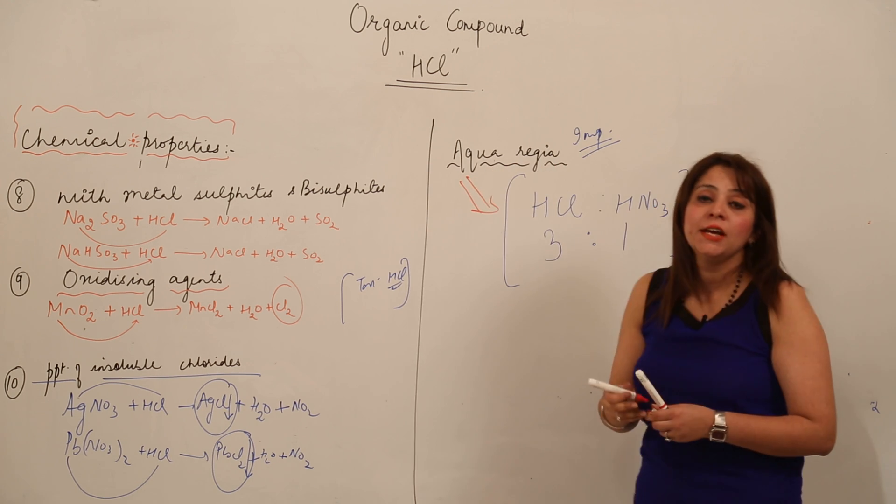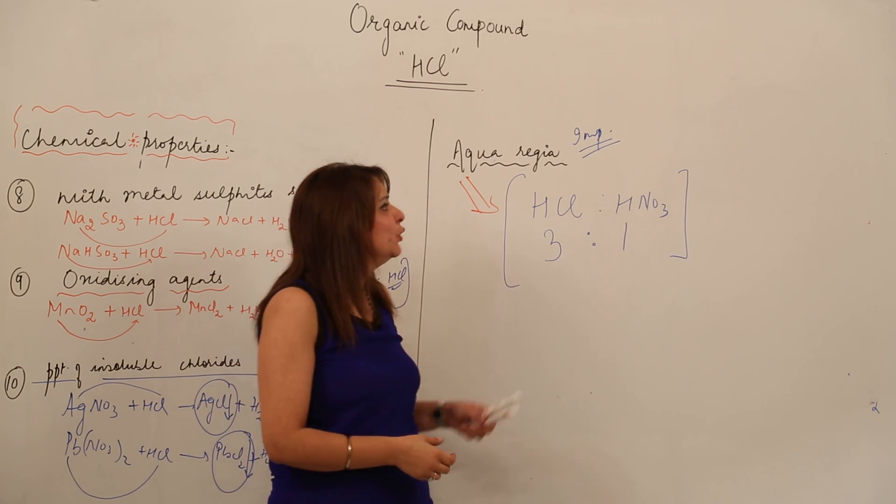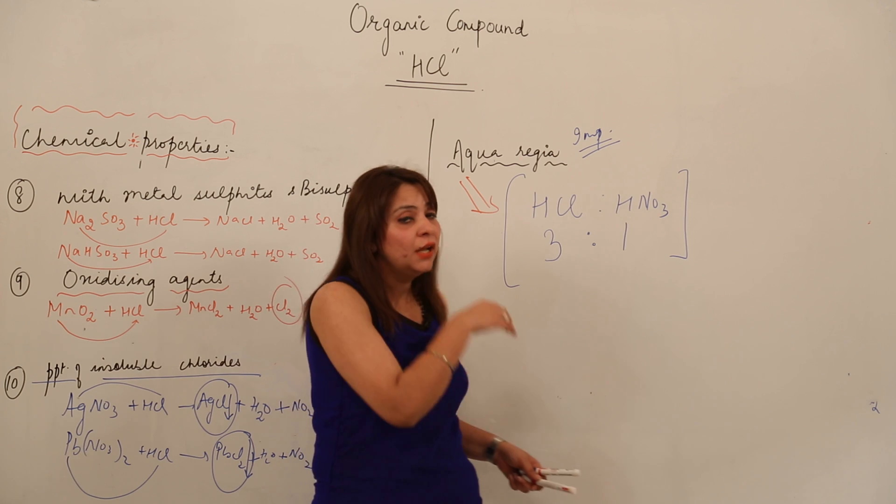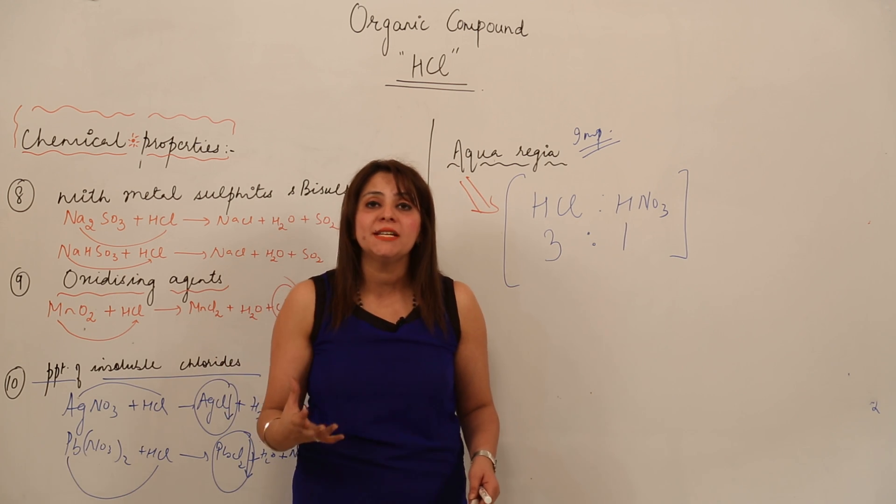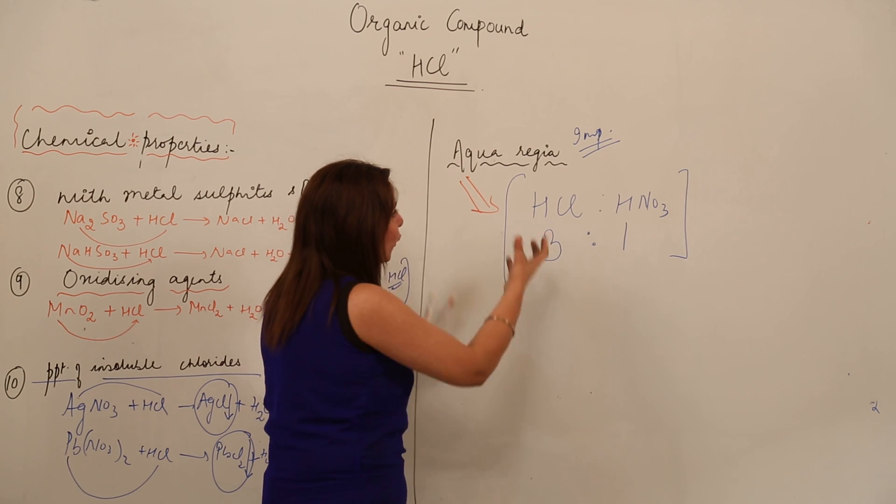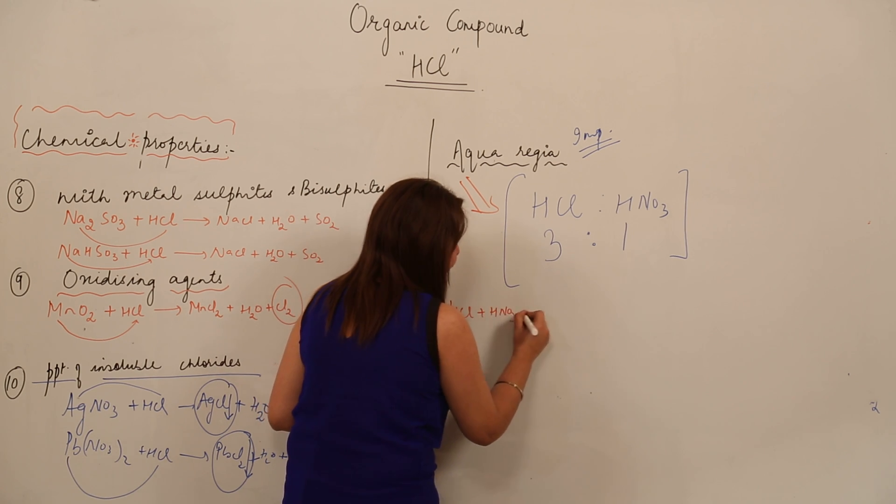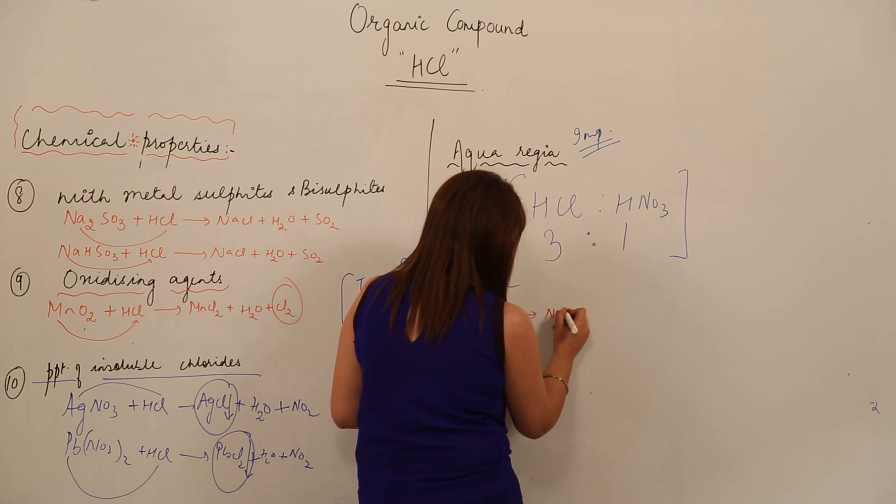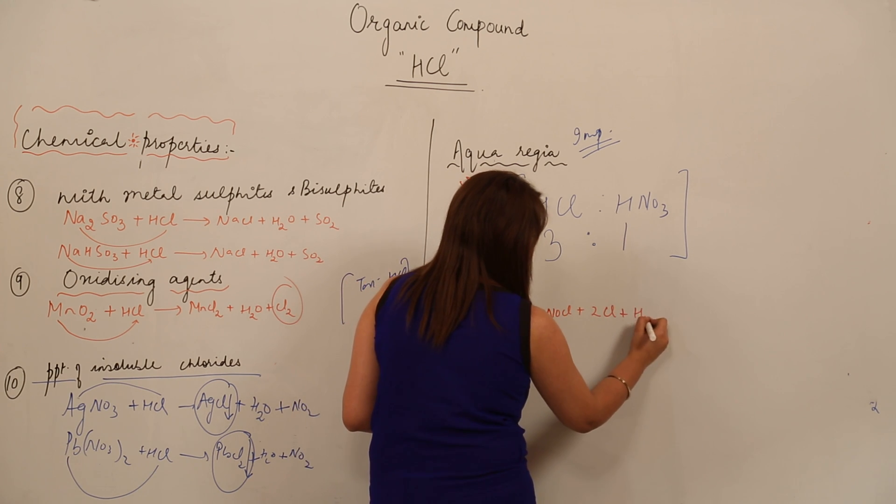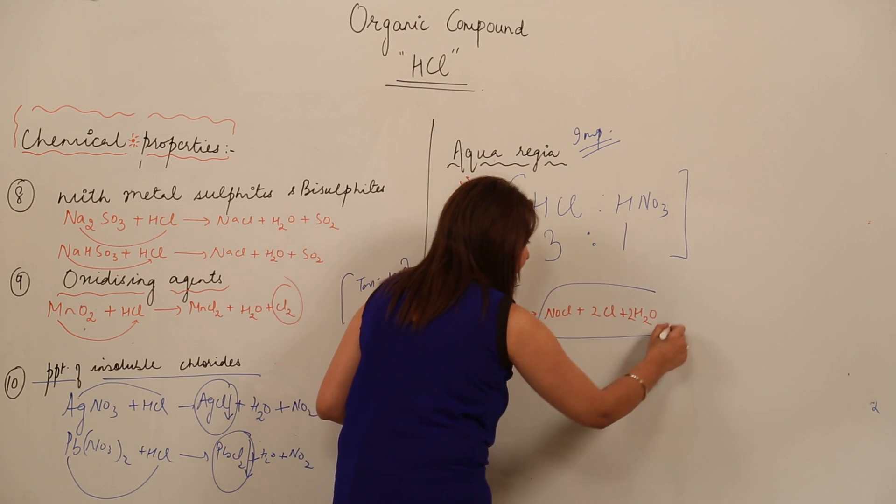Why do we need aqua regia, or what is its purpose? This aqua regia has the ability to dissolve noble metals, even those substances which are least reactive. When we mix them, we get 3 HCl plus HNO3, forming NOCl, 2Cl, and 2H2O. That's what the aqua regia contains.